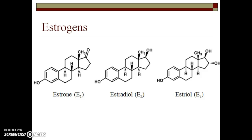I want to clarify that there are three types of estrogens that occur in the body: estrone, also known as E1; estradiol, also known as E2; and estriol, also known as E3. The primary hormone that we will be talking about throughout this semester is estradiol, E2. However, I use the terms estrogen and estradiol interchangeably.